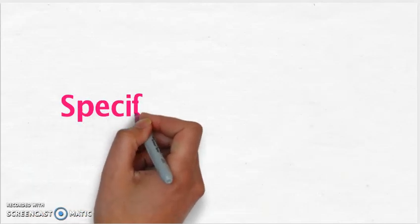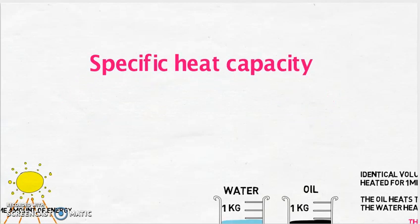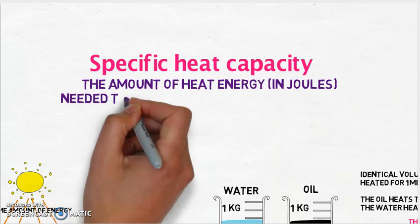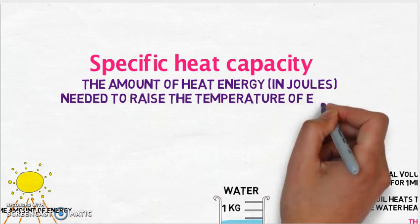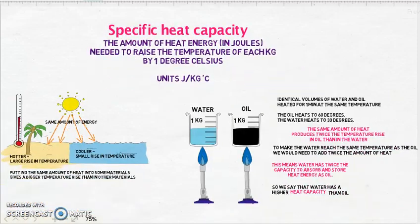I'd like you to write this down. This is our definition for specific heat capacity. So specific heat capacity is the amount of heat energy in joules needed to raise the temperature of a substance, a kilogram of that substance, by one degree Celsius. And our units for that are in joules per kilogram per degree Celsius.